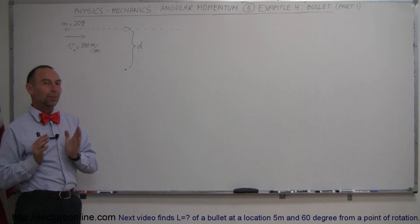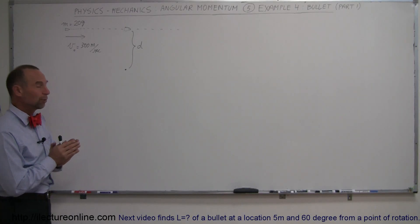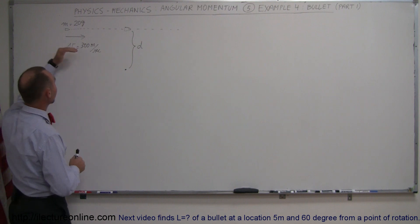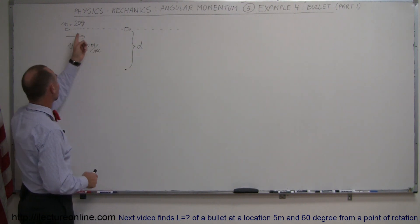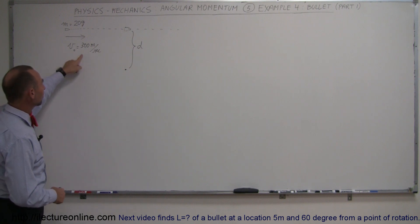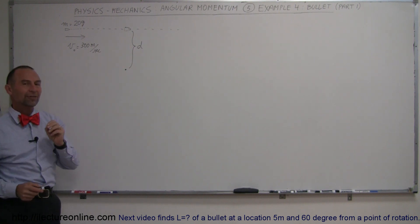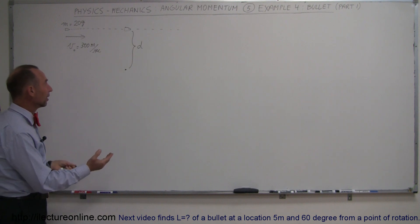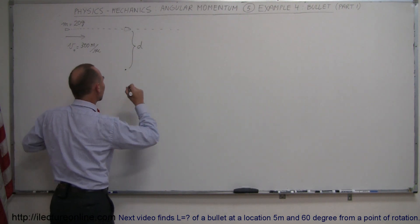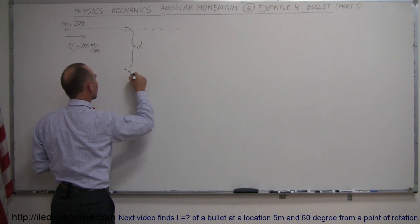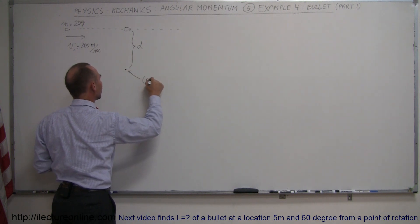Here's another example of how to work with angular momentum. In this case, we're going to take a bullet which is traveling in a linear fashion, straight line, mass of 20 grams, velocity 300 meters per second. We're trying to find the angular momentum of this speeding bullet in reference to a point right there. Let's call this the reference point or the point of rotation.